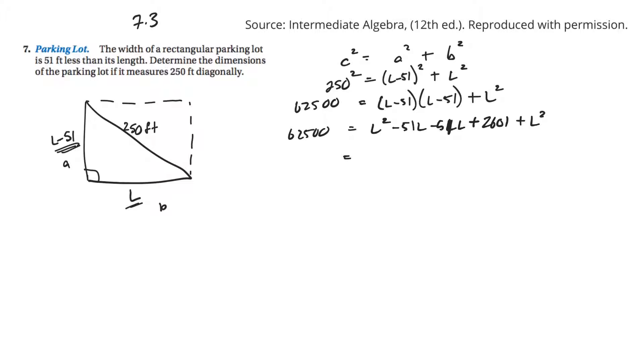There's L squared involved, so I'll put those together. 2L squared minus 102L. And then I've got plus 2601. And then I'll bring this to the other side, minus 62500, equals zero.